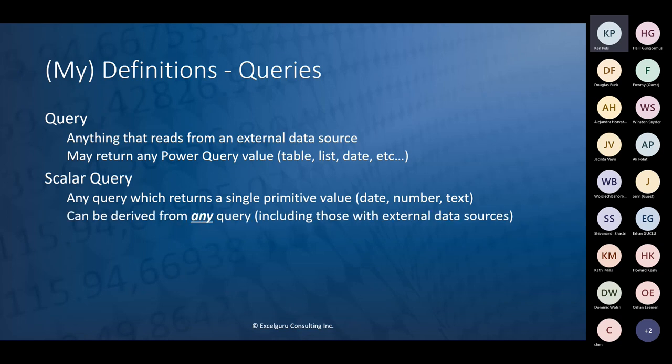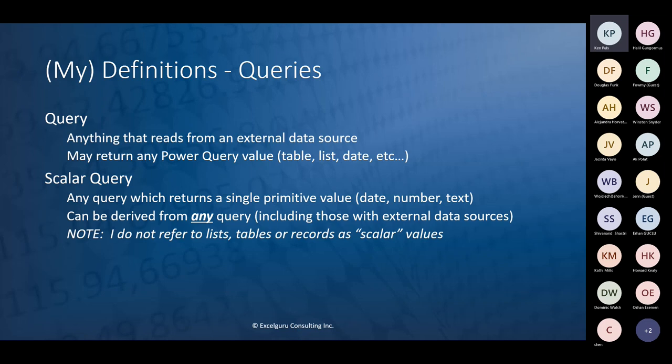I want to talk about the term 'scalar query.' A scalar query is any query which returns a single primitive value — that means a date, a number, or a text string — just one single value. It can be driven from any query, meaning you can connect to a data source and drill all the way down to a scalar value. The key thing is that a list, table, or record as output is not a scalar value — those are structured values because they're more complex and have more metadata.